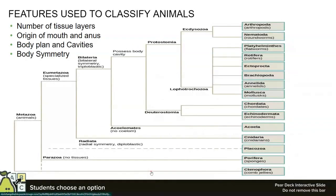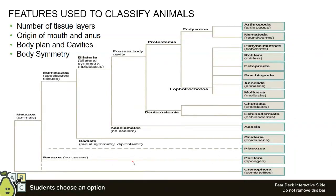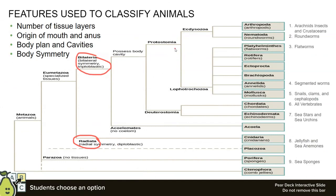Which animals are we going to be talking about today? We're going to talk about nine major phyla: arthropods, nematodes, platyhelminths which are flatworms, annelids which are segmented worms, mollusks like snails, clams, and cephalopods like octopi and squid. We're also going to be talking about chordata — all vertebrates, a pretty big group — echinodermata, which are closely related to chordates and are both deuterostomes, jellyfish and the cnidarian family, and porifera, sea sponges.